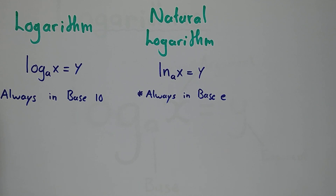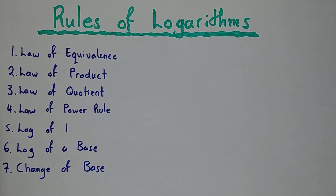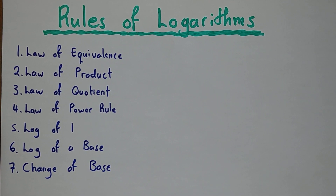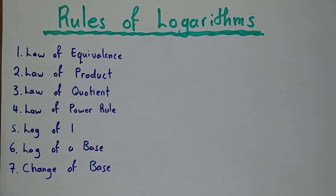Here are the rules we're going to go through — seven basic rules for logarithms. Some books may have many other rules, but these are the main ones that will guide us through the whole topic. We have rules one to seven, so let's break them down one by one for a better understanding.